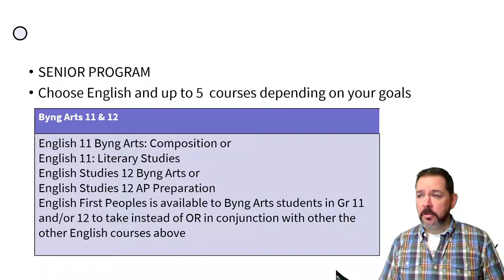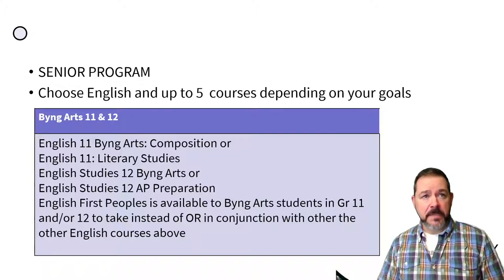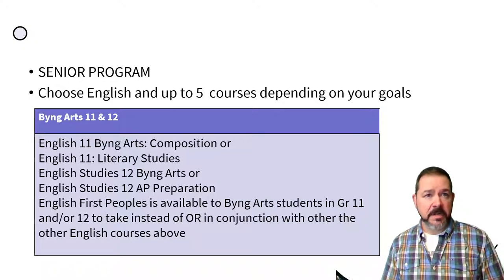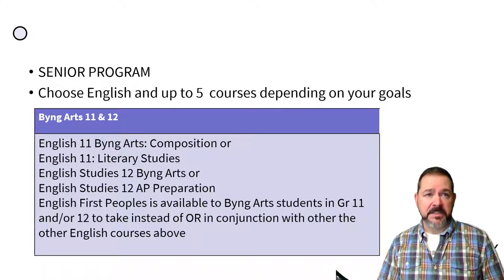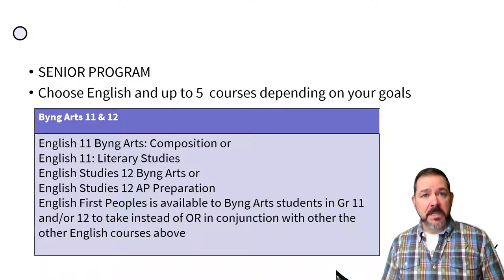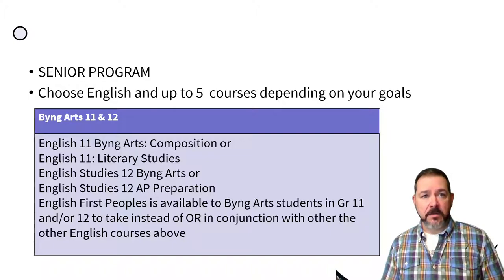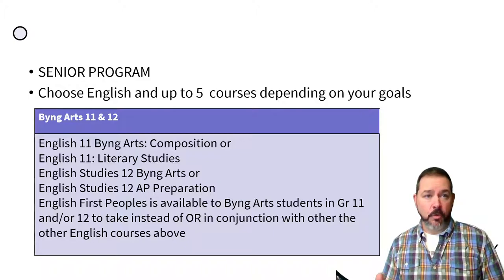The English classes are a little bit different in their configuration. In grade 11, you can choose from the English 11 Bing Arts class — your regular Bing Arts class — or you can choose a more challenging class with Literary Studies at the grade 11 level. You can also take English First Peoples in conjunction as an elective or instead of those two English classes, and they all count towards Bing Arts certification and enrollment.